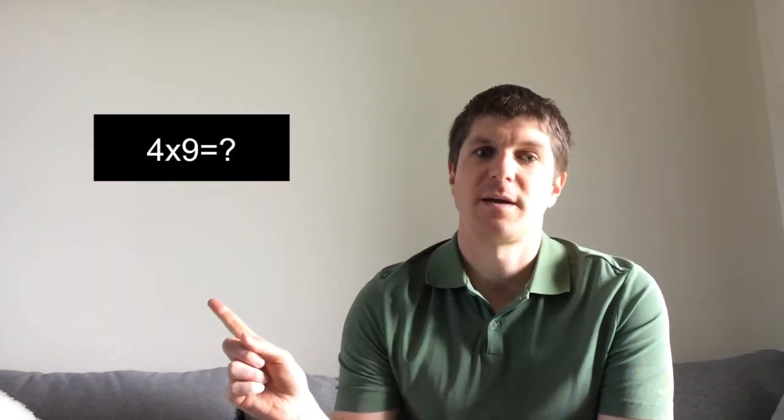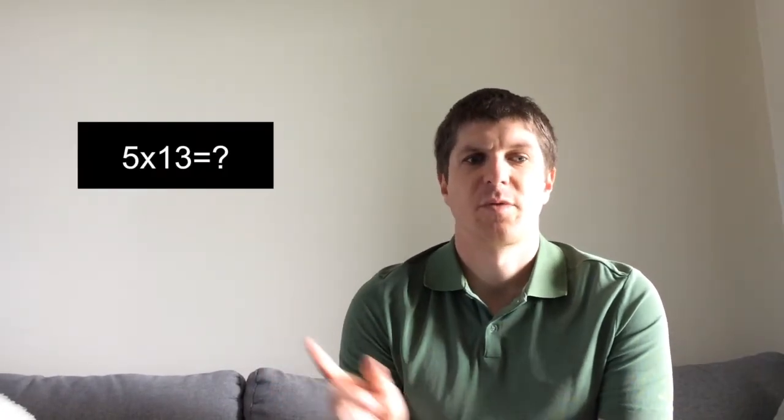Hi there. Welcome to this math strategy video. We're going to show you how to solve different problems. Today, we're going to look at multiplying by doubling and halving for 4 times and 5 times. We're going to try 4 problems: 4 times 6, 4 times 9, 5 times 8, and 5 times 13. We'll use unifix cubes and place value cubes to do this. Let's get started.